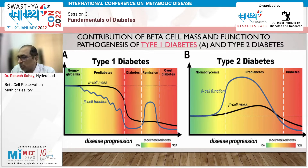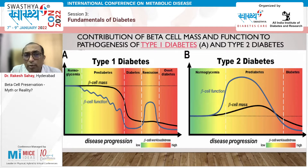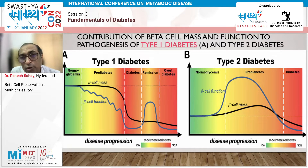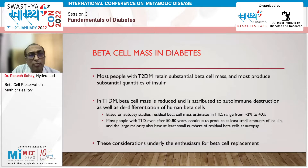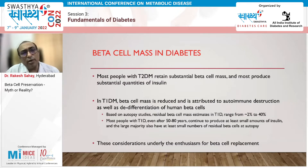At the time of diagnosis of diabetes, almost 50% of beta cell function is already gone. In the next few years, there is further progressive decline in beta cell mass. There is a significant difference in beta cell mass between type 1 and type 2 diabetes.